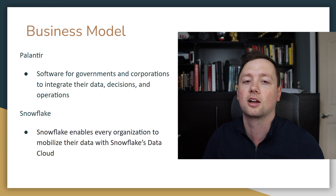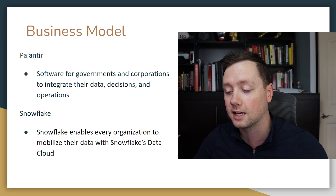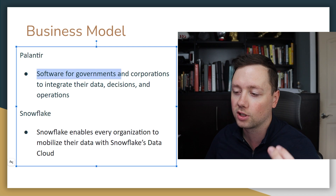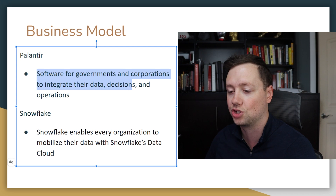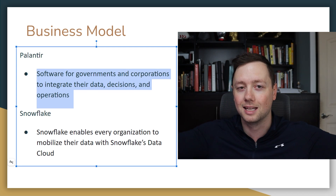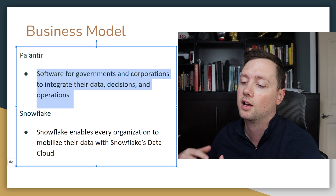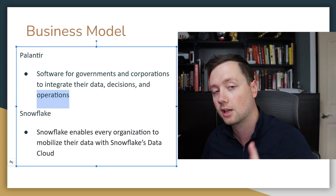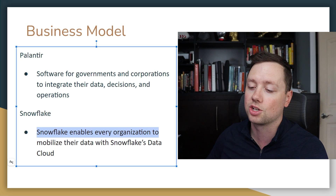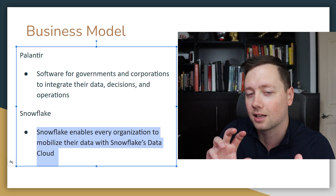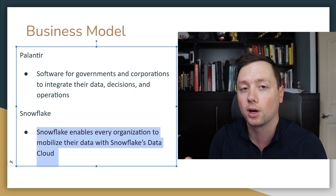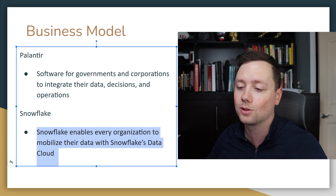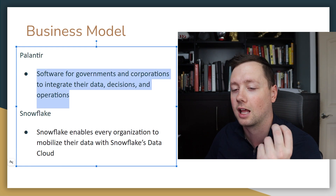The two companies we're going to look at today are two very exciting software companies — big name growth tech companies. The first one is Palantir and the second one is Snowflake. Palantir describes themselves as software for governments and corporations to integrate their data, decisions, and operations. Basically, Palantir takes a company's data and puts it into their software to give the operator better tools and information so they can make better decisions and improve operations. Snowflake is similar — they enable every organization to mobilize their data with Snowflake's data cloud. The key difference is that Snowflake is focused on giving users access to their data anywhere, 24/7, whereas Palantir is more interested in using that data to change your business and improve operations.